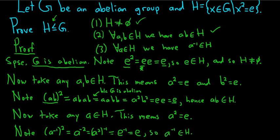So we have that H is not empty, H is closed under the group operation, and H is closed under inverses. All three conditions are satisfied. Therefore, H is a subgroup of G, and that completes the proof. I hope this video has been helpful and made sense.